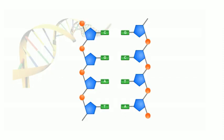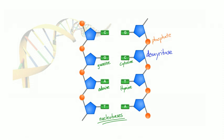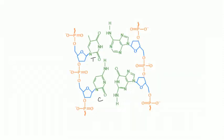DNA is made up of two strands in a double helix. The backbones are deoxyribose linked by phosphate groups, and in between the two backbones — like the rungs of a ladder — are the bases adenine, guanine, cytosine, and thymine. In RNA, uracil replaces thymine. Cytosine, thymine, and uracil are pyrimidines; adenine and guanine are purines.